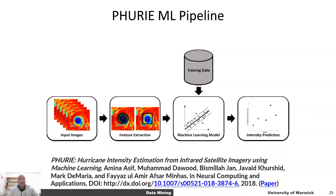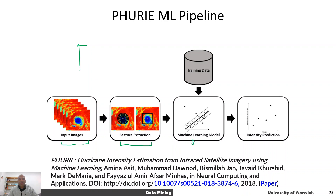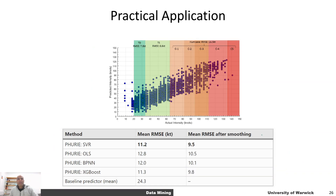We designed a method together with people at the National Hurricane Center using a bunch of training datasets. We extracted features from the hurricane images — specifically, we measured the disorder, entropy, or variance of the cloud structure, since a more well-structured cloud system corresponds to higher intensity. Using these features, we trained a Support Vector Machine (SVM) regressor and also tried an ordinary least squares regressor. For a given image, we predicted its hurricane intensity and compared it to the real value to calculate prediction error.